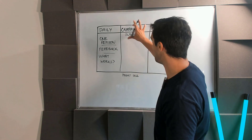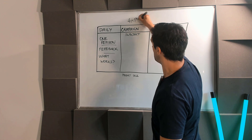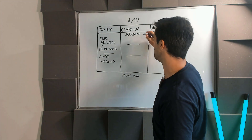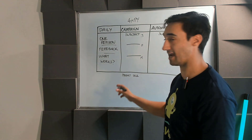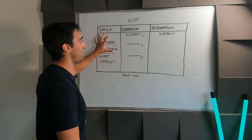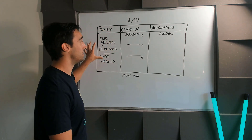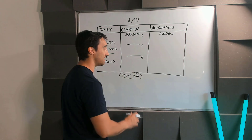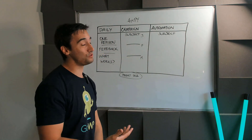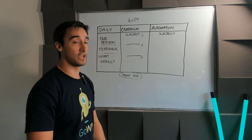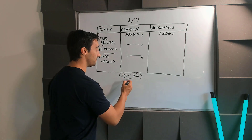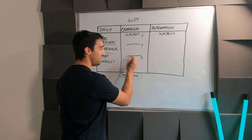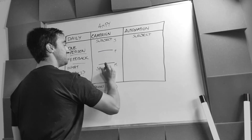I like to do four campaigns per year — one every three months. So I split a campaign into three months: for example January, February, March, with the product sale in March. I take the subject lines, email ideas, topics, and product ideas from my daily emails and put them into the campaign. The easiest approach is to work backwards from the product sale date — close the sale at the end of March, and build the campaign from there.